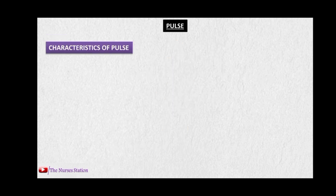Characteristics of the pulse include: rate — the number of pulse beats per minute; rhythm — whether the pulse is regular or irregular; volume — the fullness of the artery; and tension — the degree of compressibility of the artery.